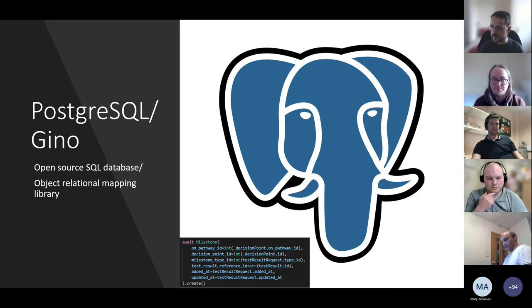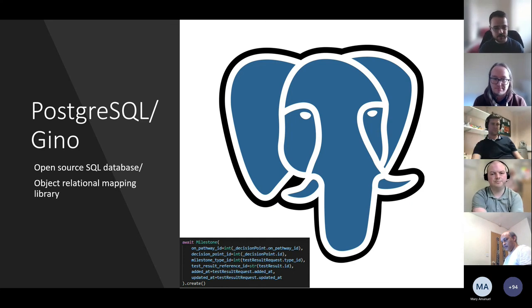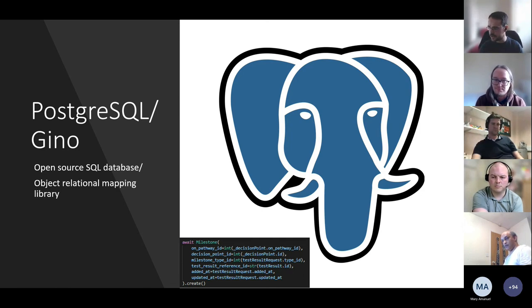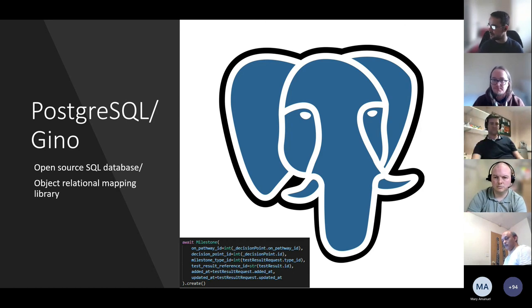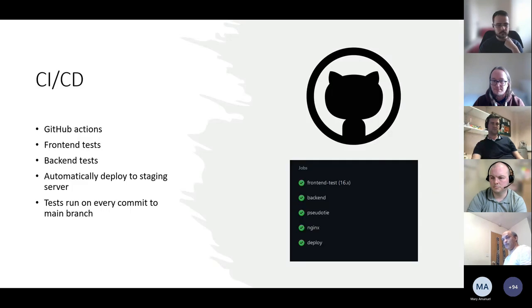We use PostgreSQL as our local back-end database — it's highly available, free, open source, multi-platform, and highly compliant with SQL standards. The back end uses Gino, a Python library for object-relational mapping that uses SQLAlchemy to build queries conveniently and handles the database connection pool. This is helpful for building larger queries in a more manageable way, especially for people without deep SQL knowledge — lowering the barrier for new contributors.